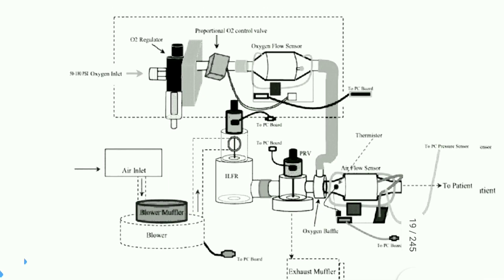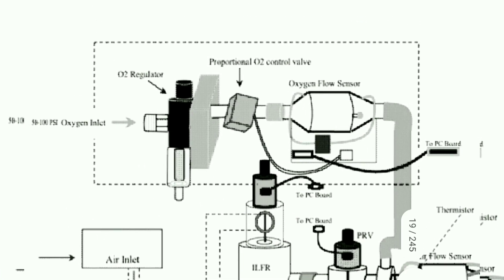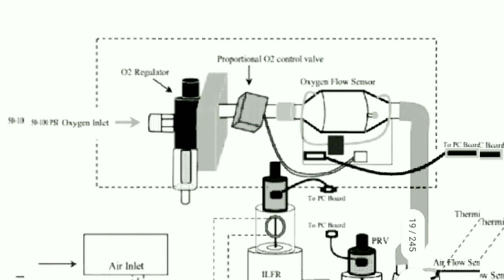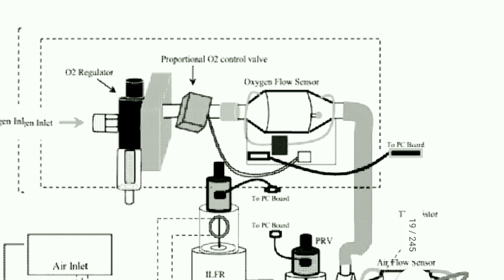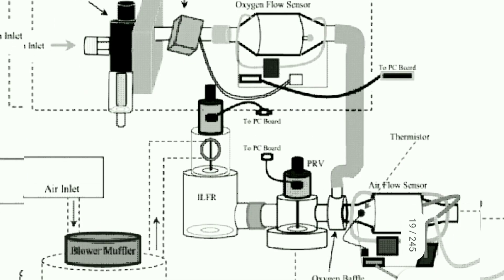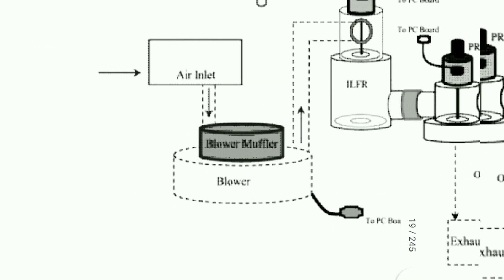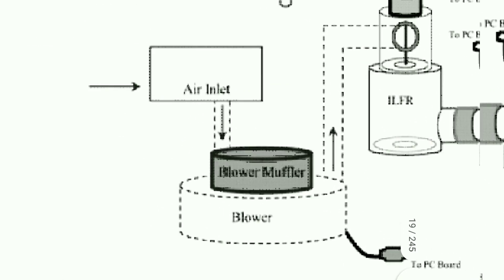This is the pneumatic block diagram of the Bypass Vision. From this side, a 5200 psi oxygen inlet feeds into the O2 regulator, then it goes to the proportional O2 control valve, then to the oxygen flow sensor, and from there it goes downward towards the oxygen baffle. The air inlet travels from there to the blower muffler.